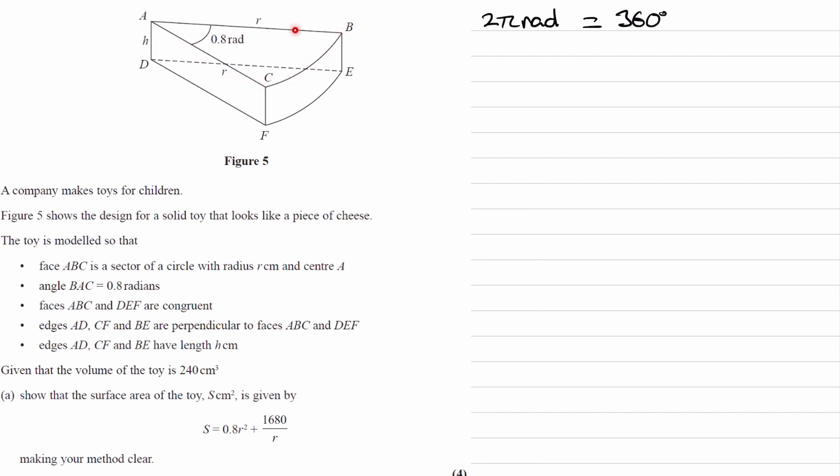So 2π radians corresponds or is equal to 360 degrees. Now what we have here is a small slice of a circle called a sector. If we were to do 0.8 divided by 2π, so remember that 2π radians is equal to 360 degrees, the two things are equivalent. If we were to do 0.8 divided by 2π, that tells us the fraction of the circle that this sector corresponds to.